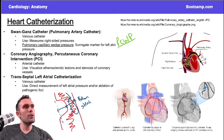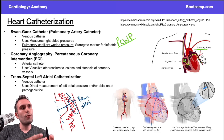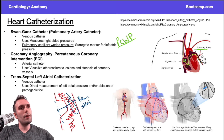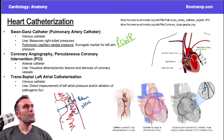The last topic is transseptal left atrial catheterization. This is primarily used when you want to perform an ablation of a pathogenic focus — for example, in atrial fibrillation, the pathogenic focus is in the left atrium. So the challenge is: how do you get a catheter to the left atrium? You usually can't run it through the lungs.